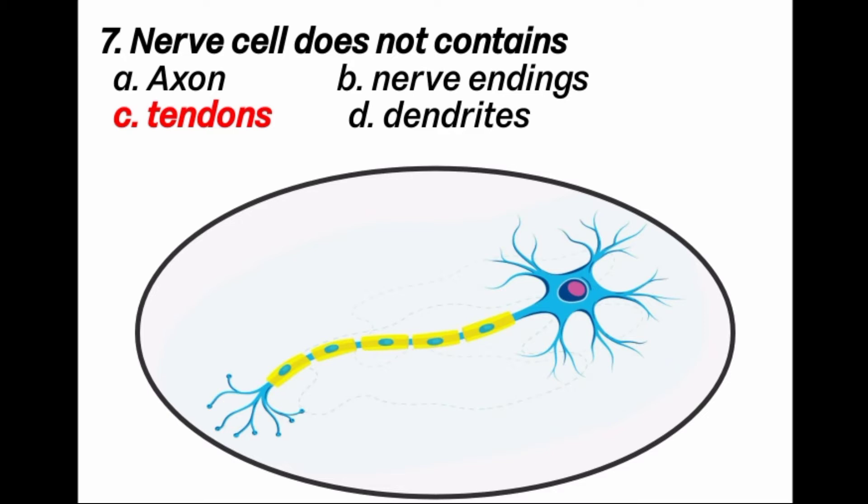Tendons help to join skeletal muscles to bones. That's why tendons are not found in nerve cells.